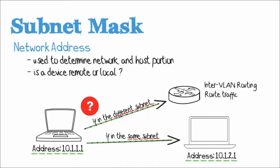I'm going to explain this in more detail in the next few minutes. But as an example, 10.1.1.1 and 10.1.2.1 are in the same subnet if they're using a slash 16 mask. However, if they're using a slash 24 mask, that means the devices are on different subnets. So let me explain that in more detail.